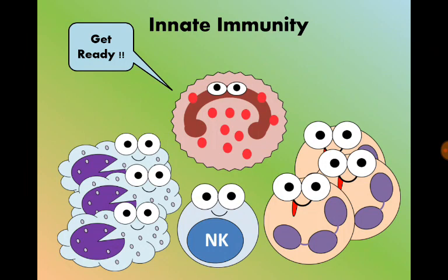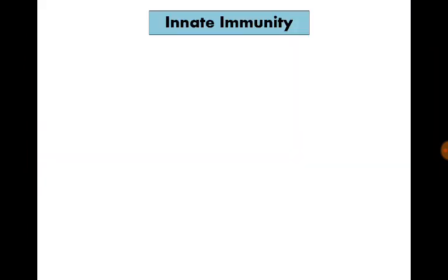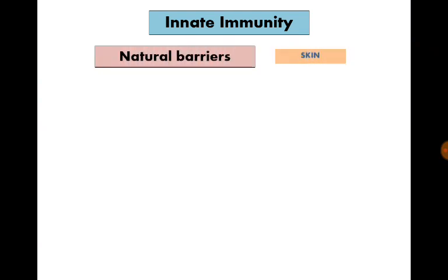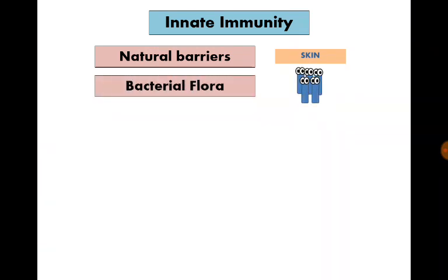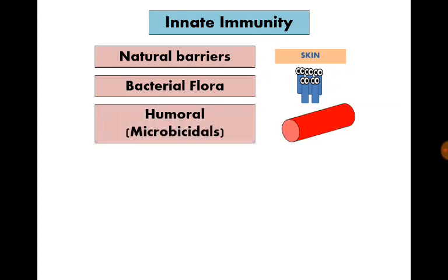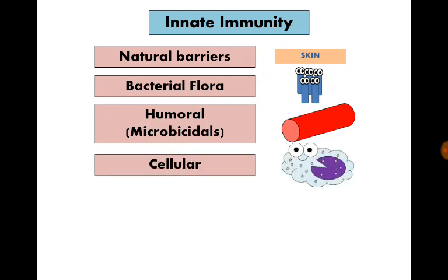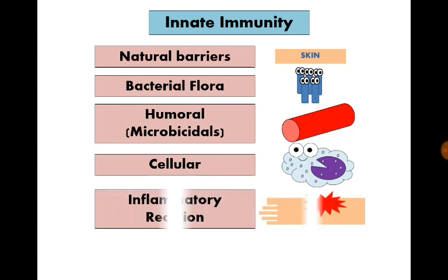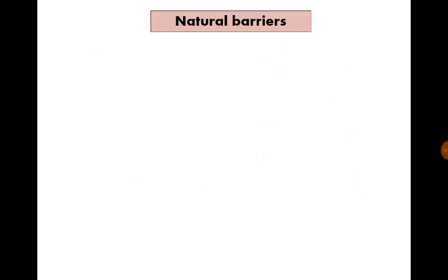However, innate immunity is very important at the beginning of any infection, until the specific immunity develops. It is composed of five main factors: natural barriers that prevent entrance of organisms into our body, bacterial flora or the kind bacteria that defend us against bad ones, humoral factors — microbicidal factors that circulate in blood — cellular factors, and lastly the inflammatory reaction.